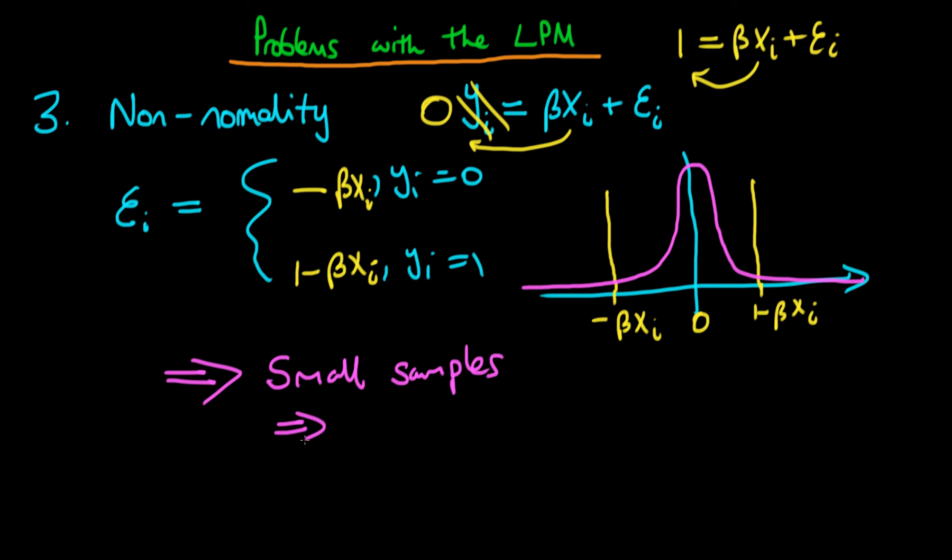In small samples what we'd actually need to do is some sort of non-normal inference. We'd need to use non-normal distributions in order to be able to do inference on small samples.